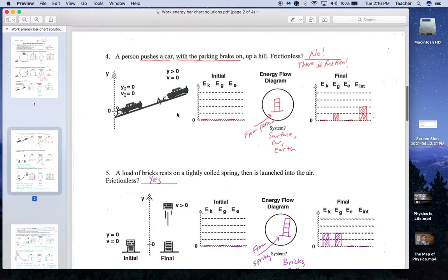So number four, a person pushes a car with the parking brake on. So this is not frictionless. I made my system the surface, the car, and the Earth. I didn't have the person in my system, because I wouldn't know how to account for that energy. Zero kinetic, zero gravitational, zero elastic at the beginning. I'm getting energy from the person who's pushing or doing work on the car. At the end, we're uphill, and there's some heat. It's not moving at the beginning or the end.